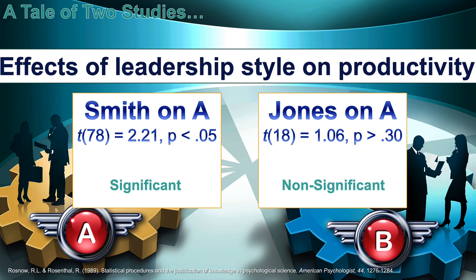But when Jones replicated Smith's study, Jones found something different: t with 18 degrees of freedom equals 1.06, statistically non-significant. Two studies were conducted on the same training program — one was significant, the other was non-significant.